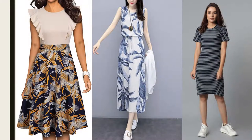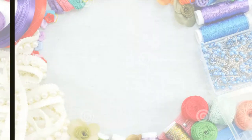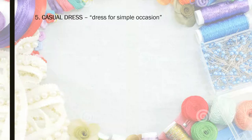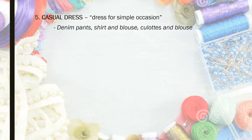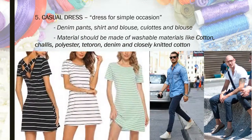How about this one? Very good. These are the casual dresses, what we call the dress for a simple occasion. Usually, we use denim pants, shirt and blouse, or culottes and blouse. The material is washable — just like cotton, chalice, polyester, Tetheron, denim, and closely knitted cotton. Again, the casual dress is what we call the dress for a simple occasion.